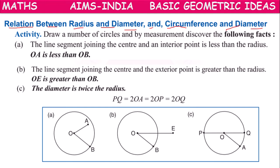We are going to study the relation between radius R, diameter D, circumference C, and diameter D of a circle. For doing this, let's draw a number of circles and by measurement discover the following facts.